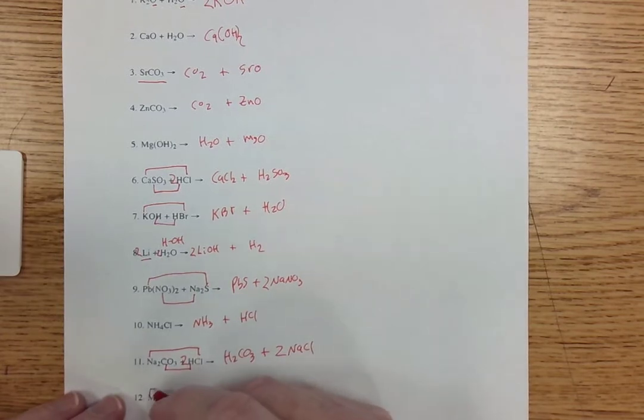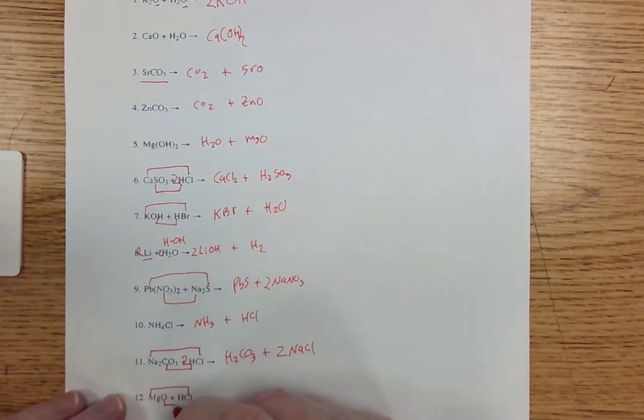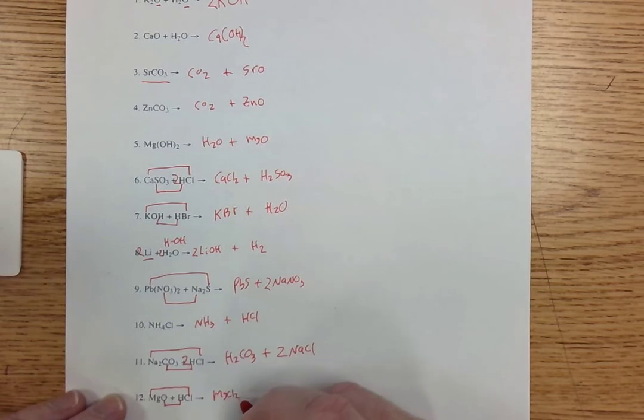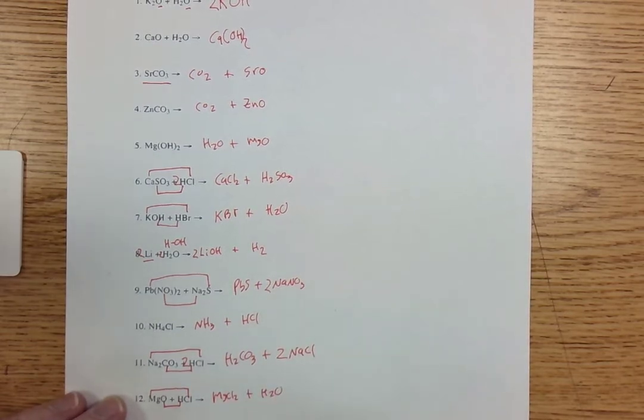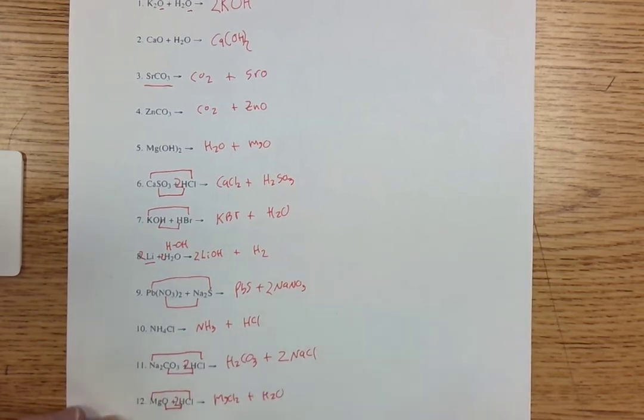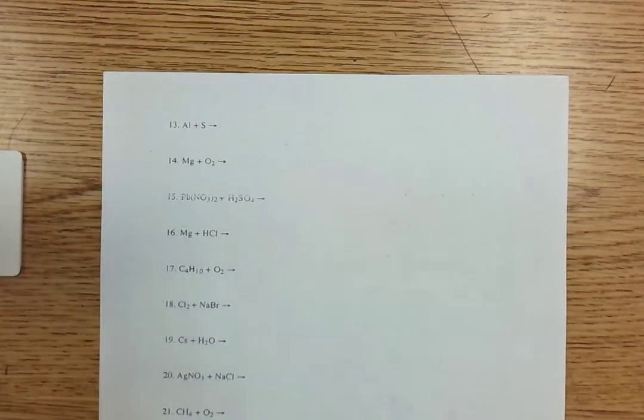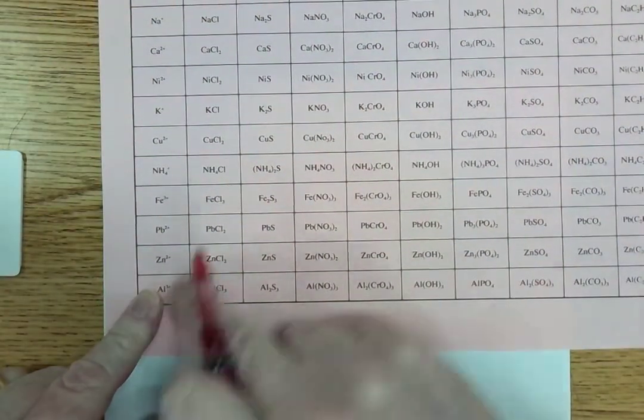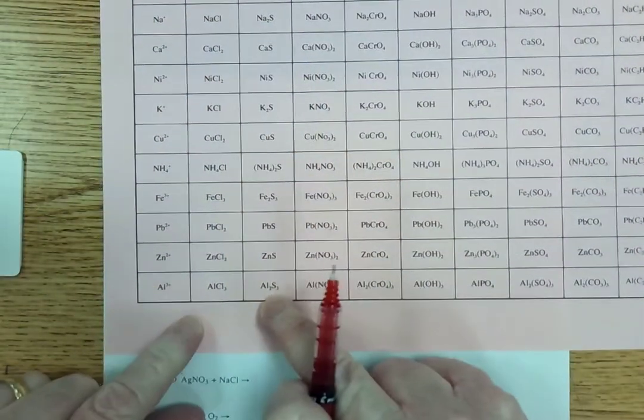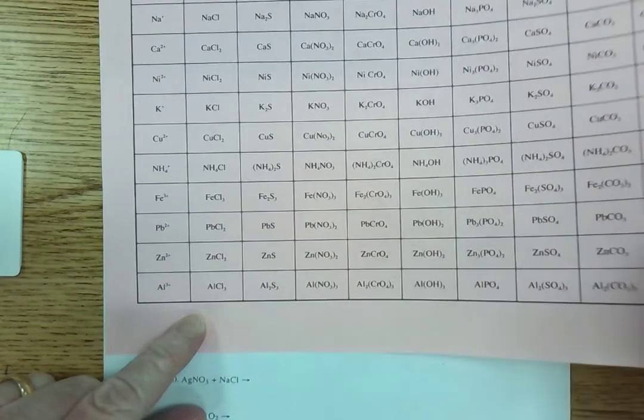MgO and HCl, another double replacement. I'm going to get MgCl2 and H2O. To balance that, I need a two on the HCl. Now, that's the first side of this. Let's go back over here. Two singles coming together. That's a combination. So let's look here. Aluminum and sulfide coming together. That's Al2S3.